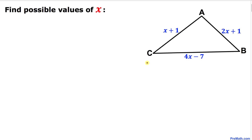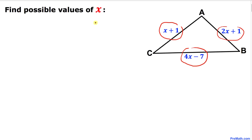Welcome to pre-math. In this video tutorial we have got triangle ABC, as you can see in this figure, such that our side lengths are x plus 1, 2x plus 1, and 4x minus 7. We are going to find the possible values of x — that means we're going to solve for x.